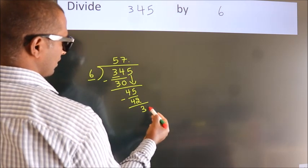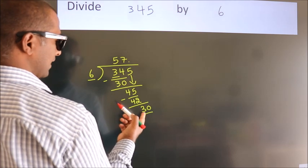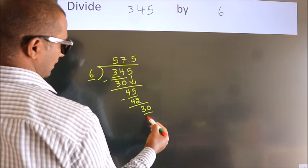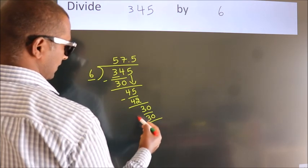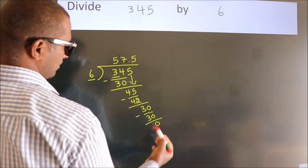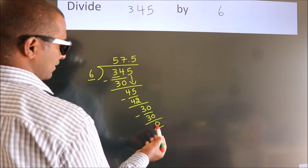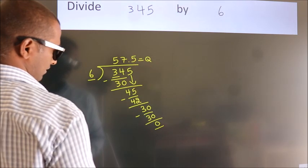we put a dot and take 0, so 30. When do we get 30 in the 6 table? 6 fives, 30. Now we subtract. We get 0 here. We got remainder 0. So this is our quotient.